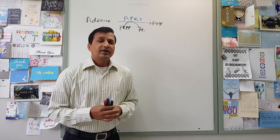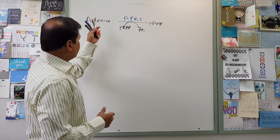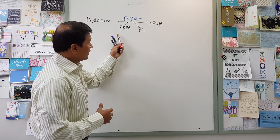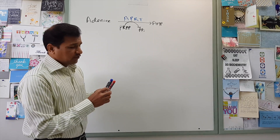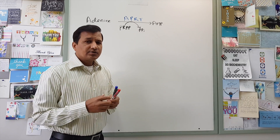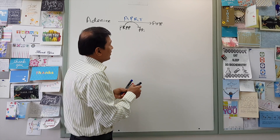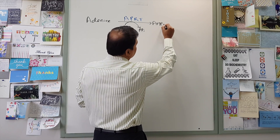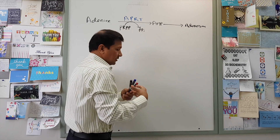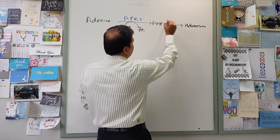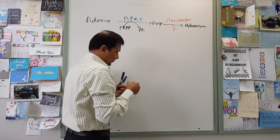Let's begin to understand severe combined immunodeficiency disorder. Adenine, which is a free base, is converted into adenosine monophosphate by the APRT enzyme. If the cell doesn't need adenosine monophosphate — for example, during cellular turnover — the AMP is further converted into adenosine by the enzyme 5'-nucleotidase, with release of inorganic phosphate.